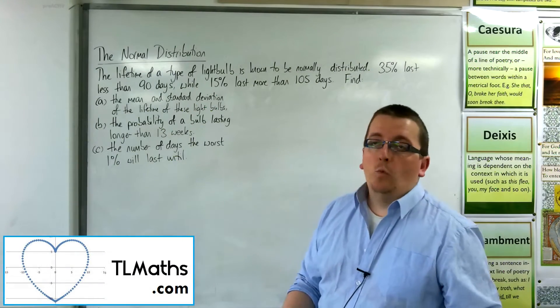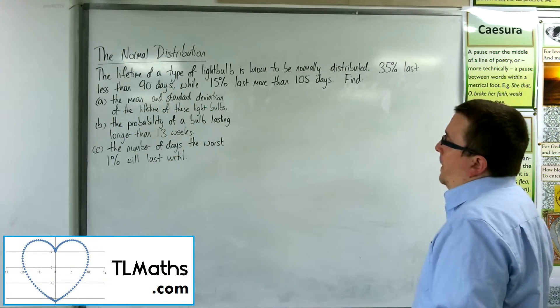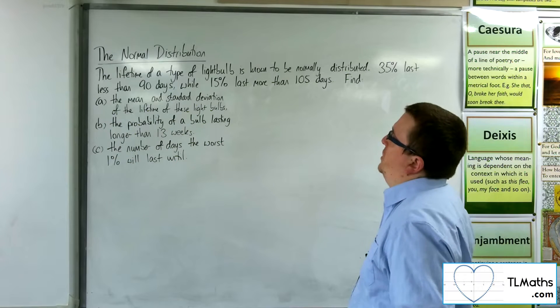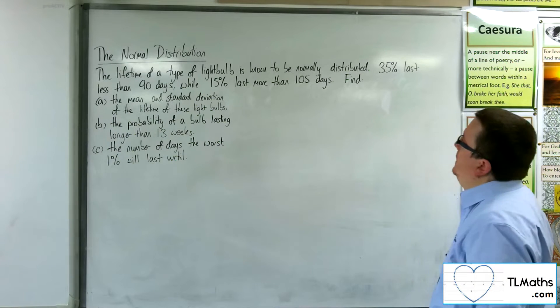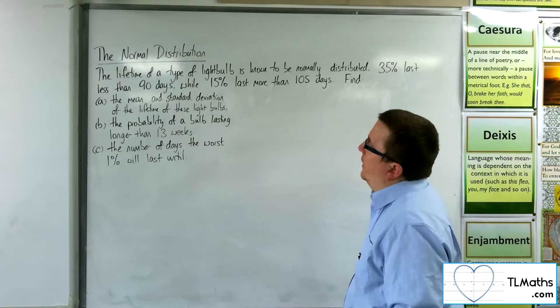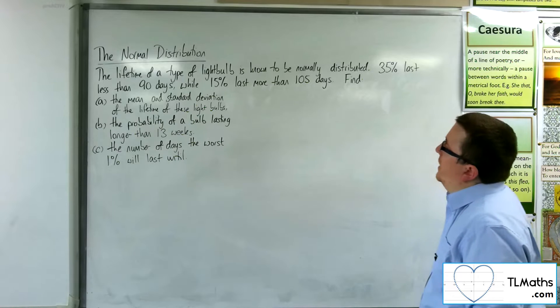Okay, so in this video we're going to look at a worded problem. Now that we've gained a few more skills, we've got the lifetime of a type of light bulb is known to be normally distributed. 35% last less than 90 days, while 15% last more than 105 days.